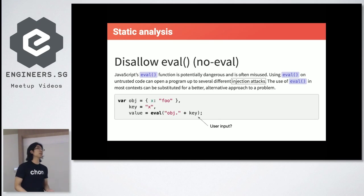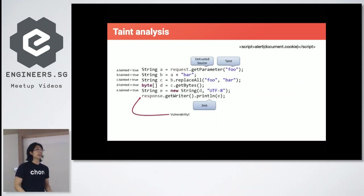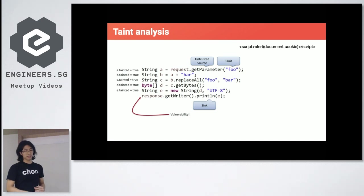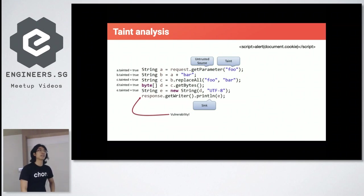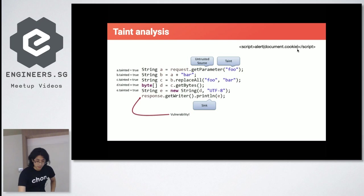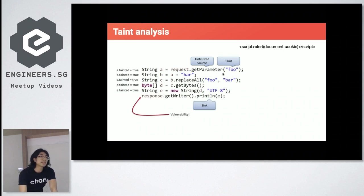But if this key is user input, it could potentially lead to a vulnerability. To find out whether key is user input, we use taint analysis. There are two main concepts: a source, which is where data comes in, and a sink, which is where data goes out. In this example of code vulnerable to cross-site scripting, A is request.getParameter — a source because that's where the attacker can provide input.